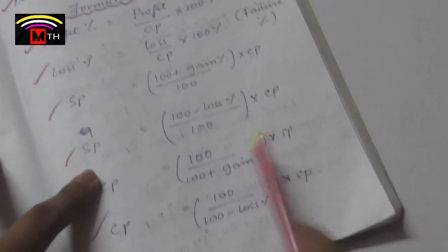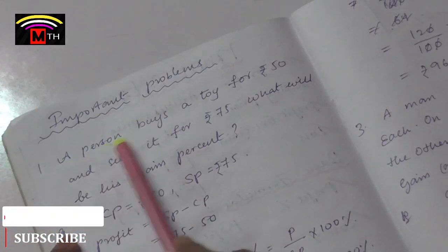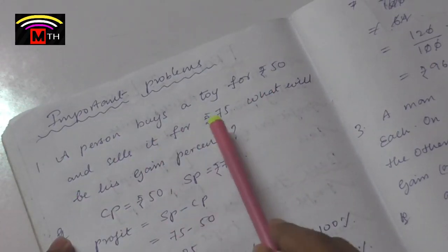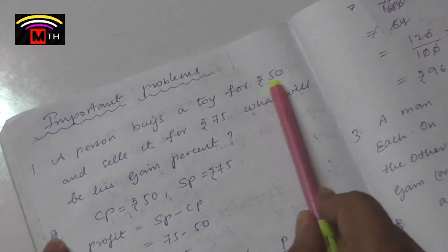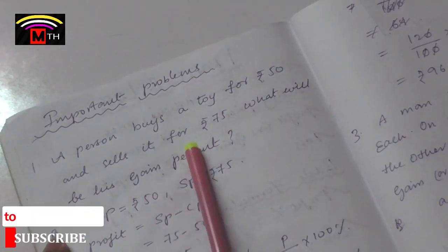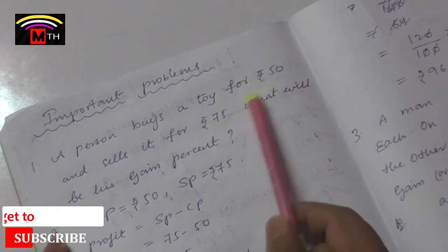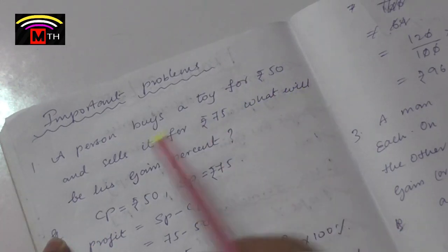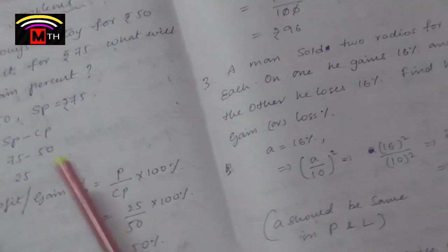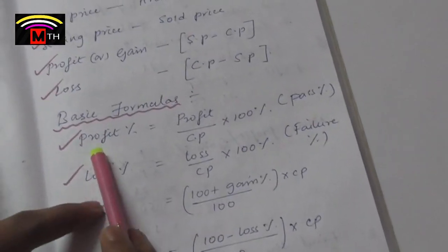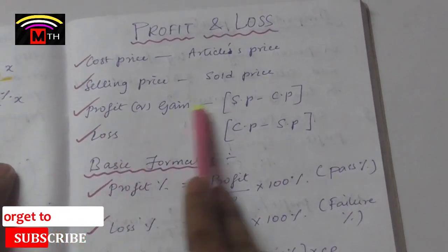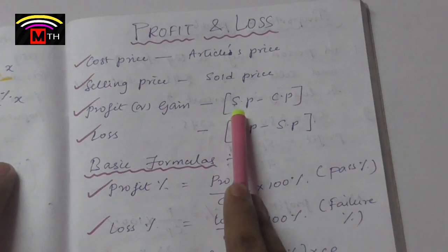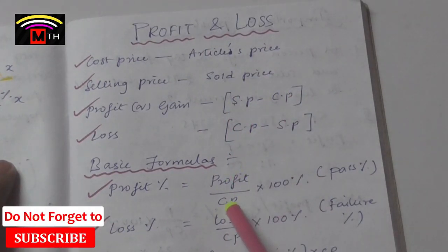Example: A person buys a toy for Rs50 and sells it for Rs75. What will be his gain percent? He paid Rs50 and sold for Rs75, making Rs25 extra. So what will be his gain percent? The formula is Profit by CP into 100, that is SP minus CP divided by CP into 100.